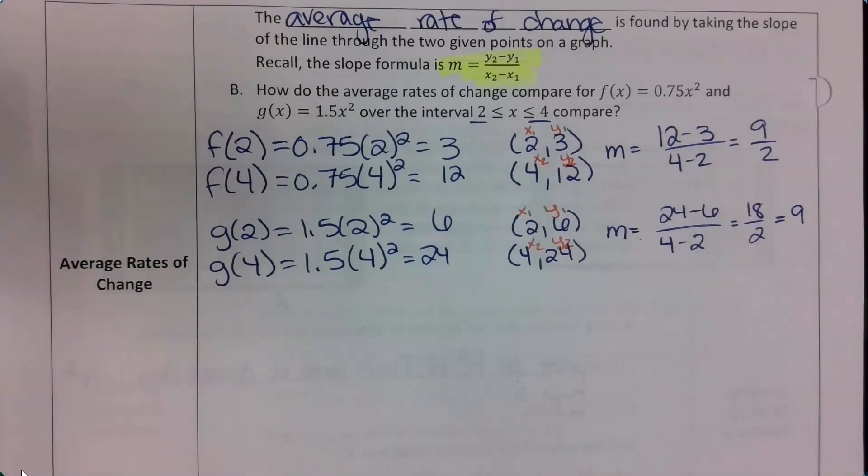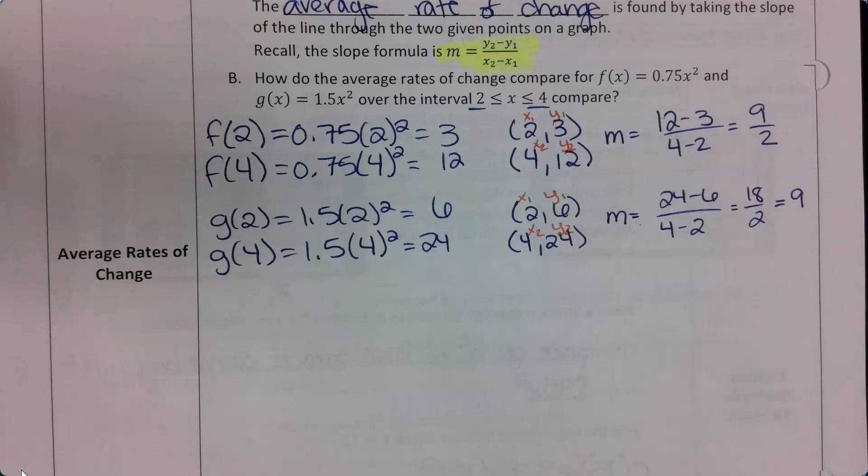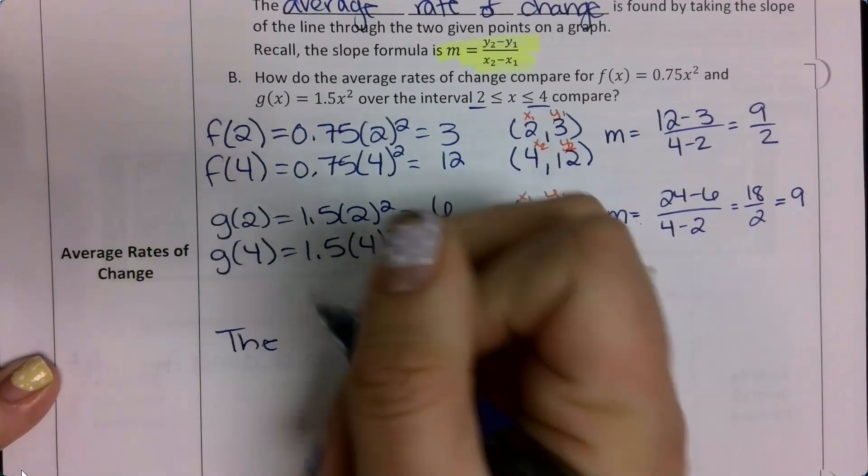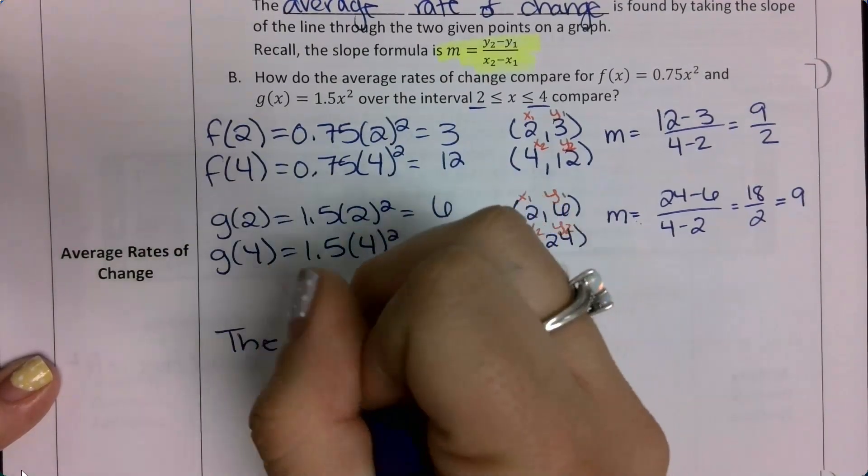So, how are my rates of change different between the two functions? So I have 9 and 9 halves. Yeah, so the rate of change for g is twice as much as the rate of change for function f.